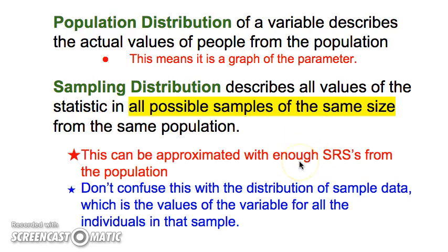Enough SRSs can approximate the sampling distribution. In general, we're not going to have a true sampling distribution, but if we took 100 samples, we're using that to approximate the sampling distribution because there are an incredible number of possibilities for a sample size of 10,000 from a population of 319 million. You could use n choose r to find the number of combinations of 10,000 from 319 million. So if we have enough samples, we can use them to approximate the sampling distribution.